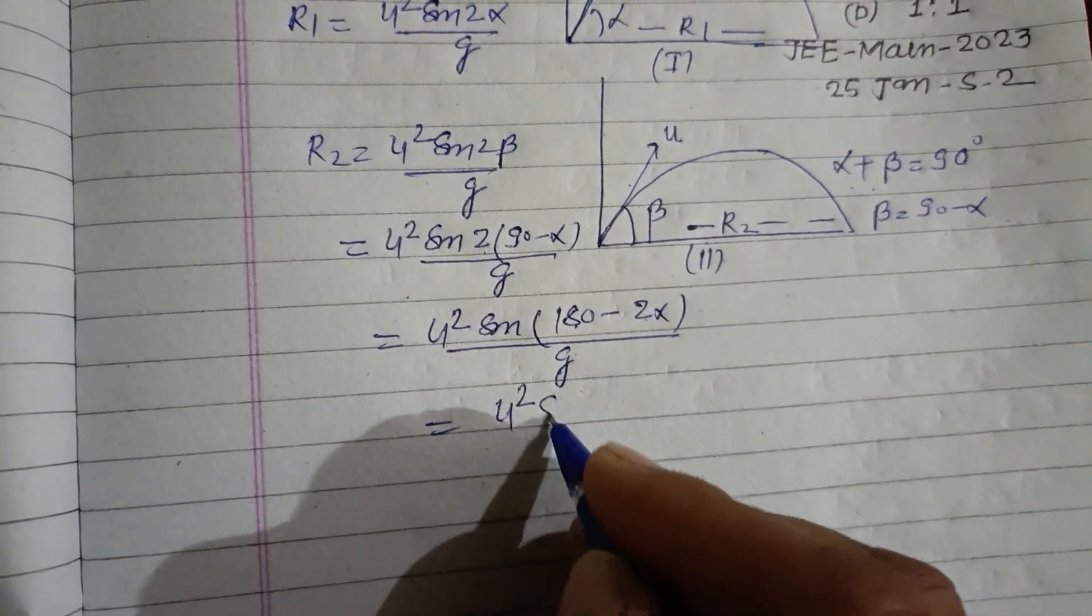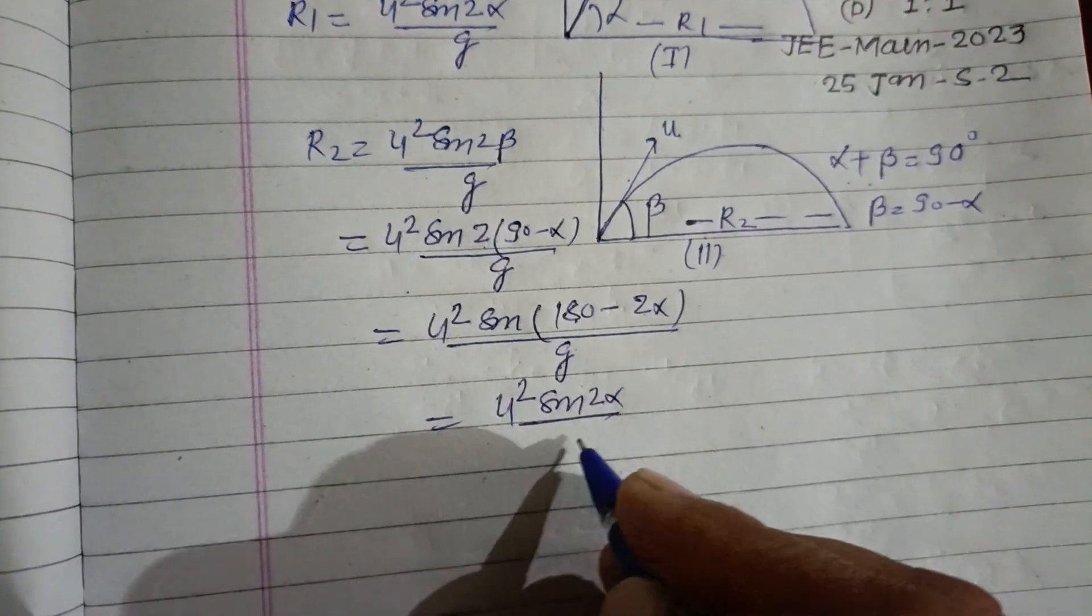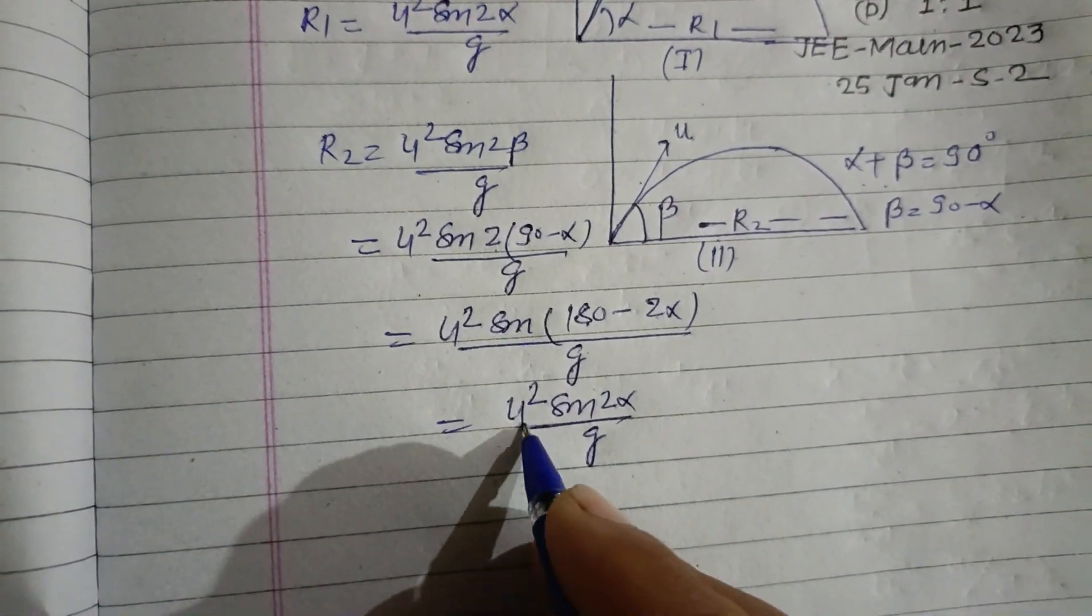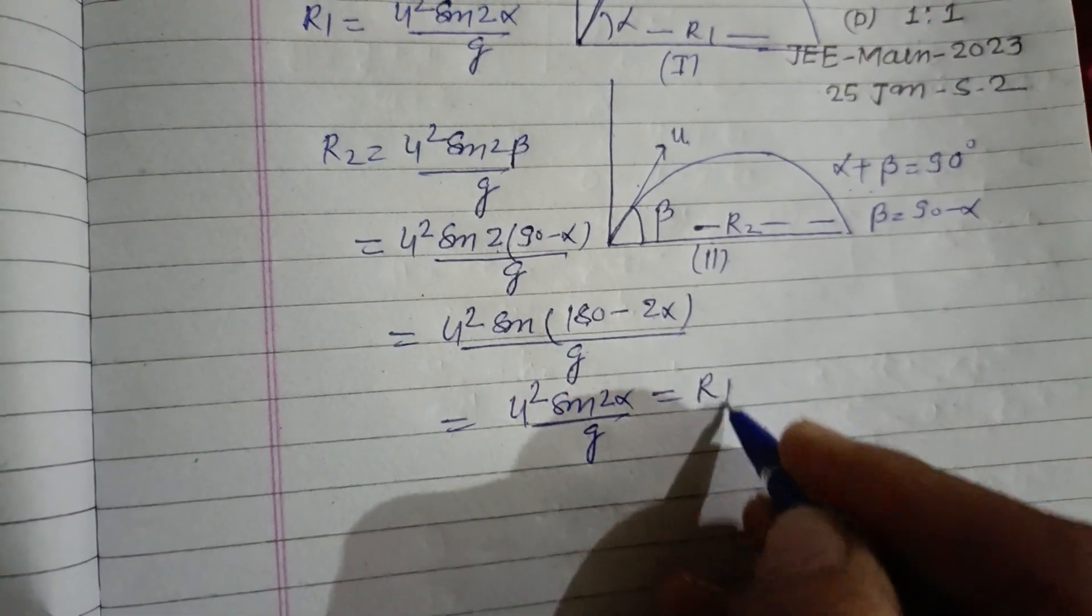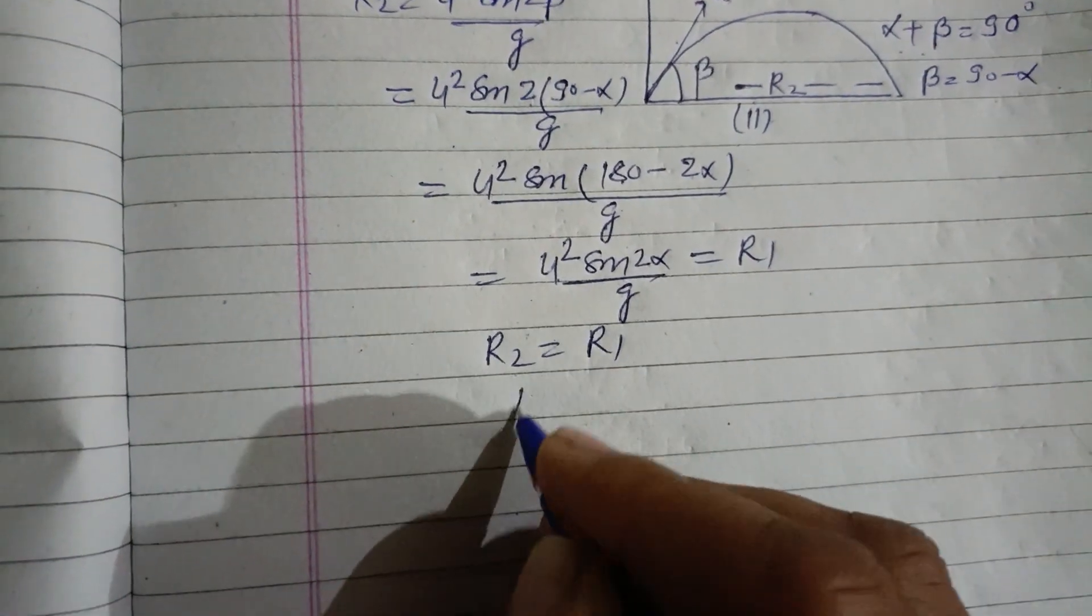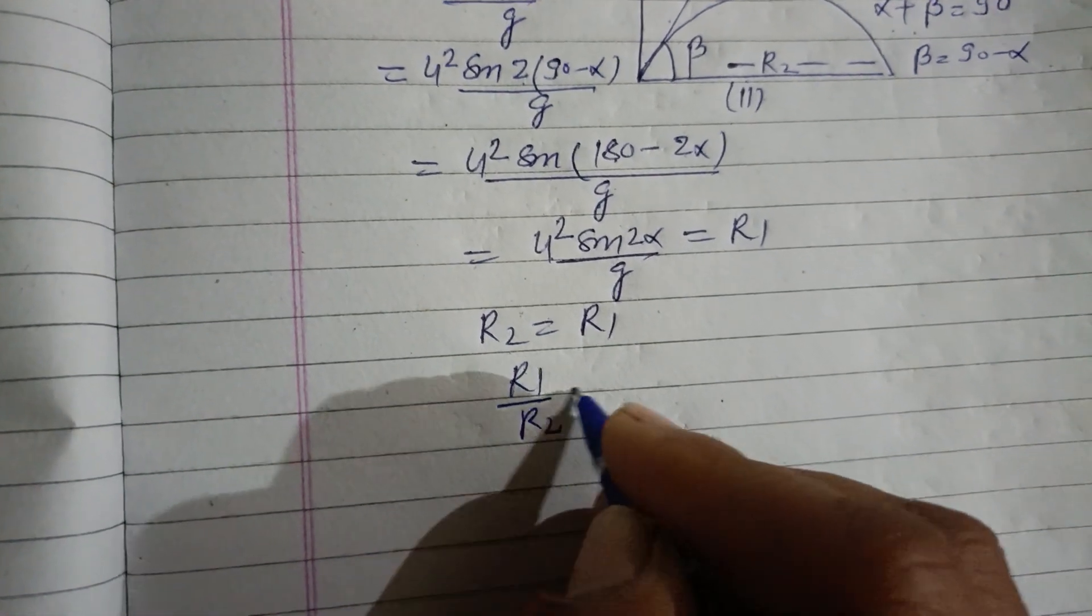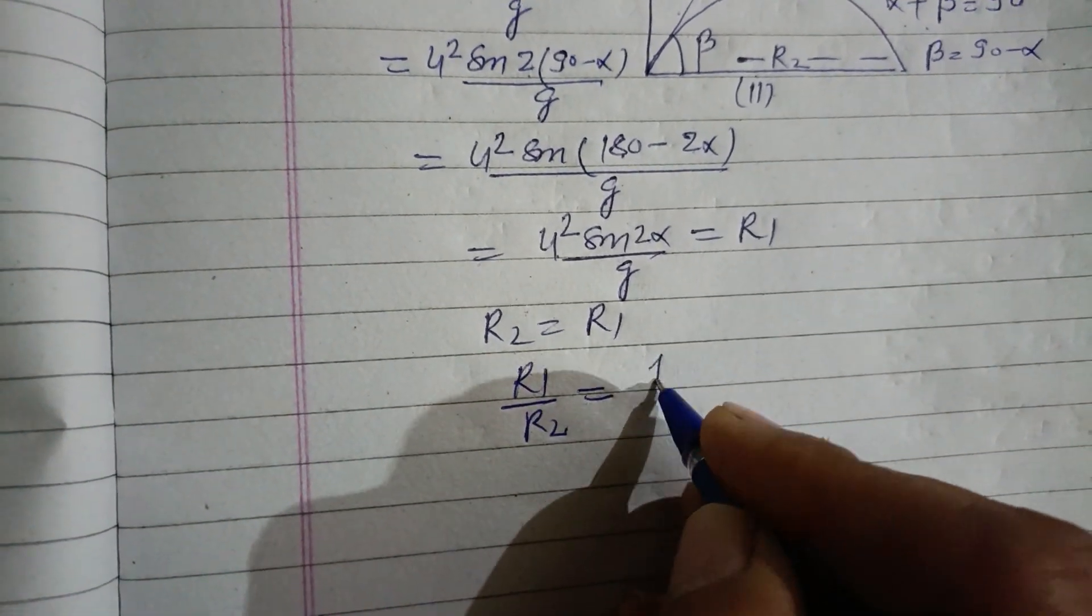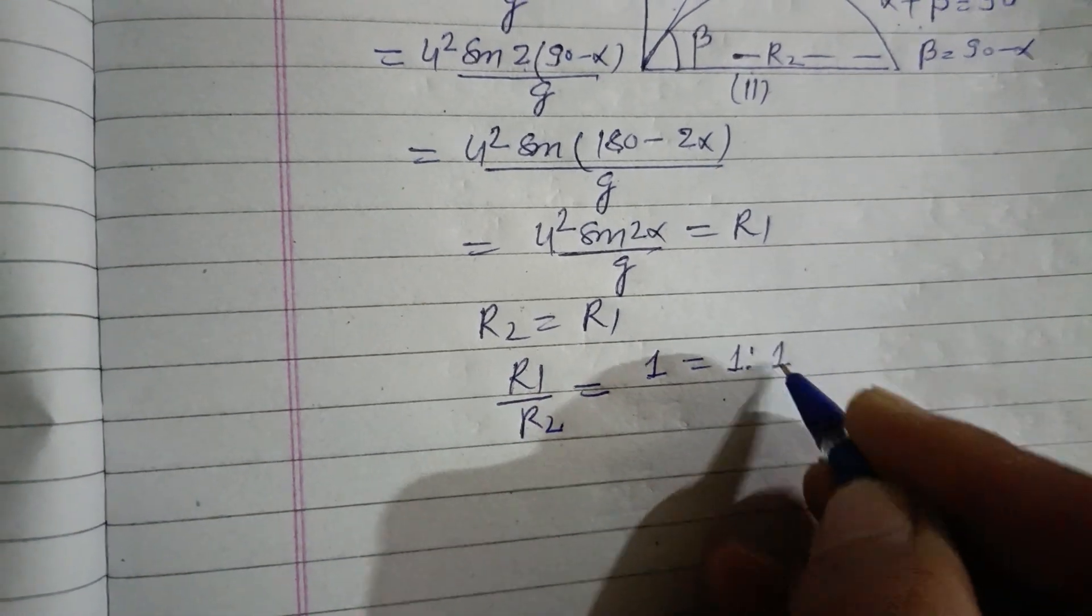R1. Therefore R1 upon R2 equals 1, or 1 ratio 1. We write it as therefore R1 to R2 equals 1 ratio 1. So this is our answer which is found